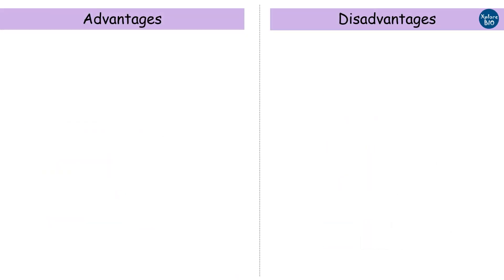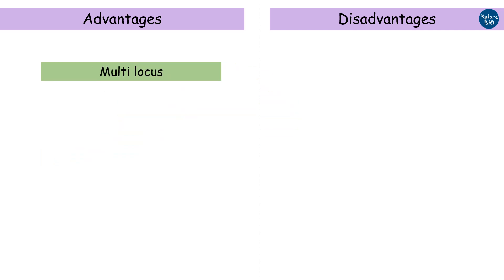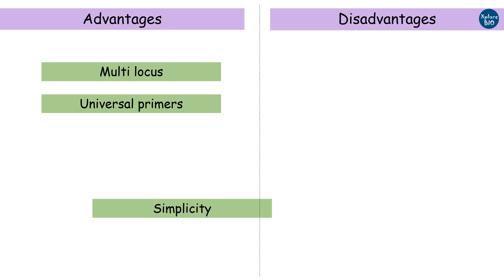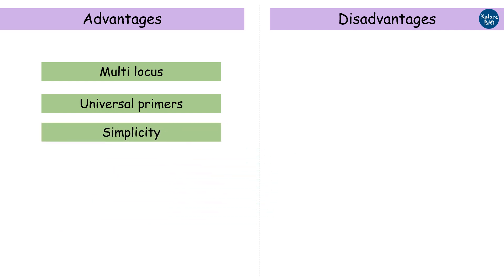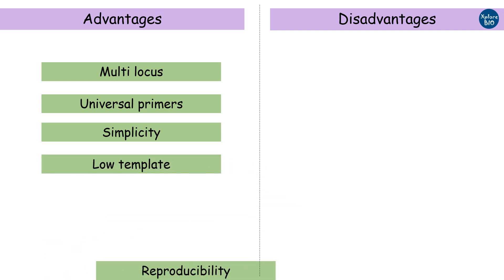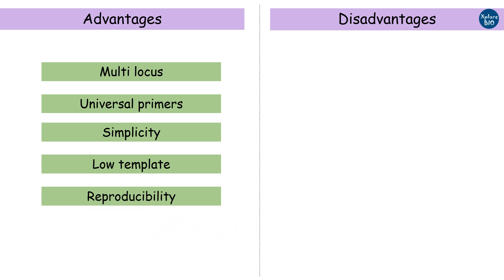Now let's talk about some advantages of AFLP marker. As restriction sites are present across the whole genome, this marker can analyze multiple loci at once. Sequence information about the organism is not essential, as primers complementary to the adapter sequences are designed. In contrast to RFLP, which takes longer time for probe hybridization, AFLP is comparatively simple. Since PCR amplification is used, AFLP is possible with a lesser amount of genomic template, and results are highly reproducible provided high-quality DNA is used.